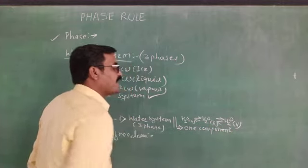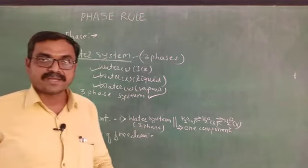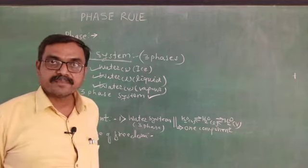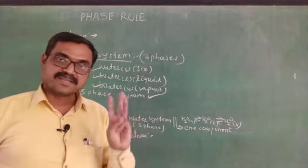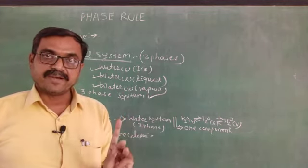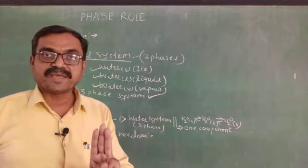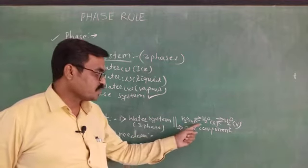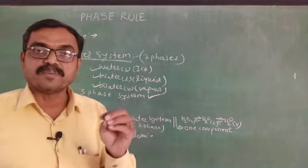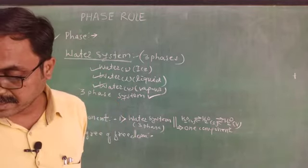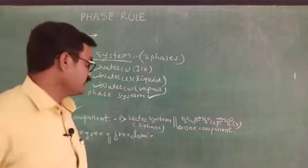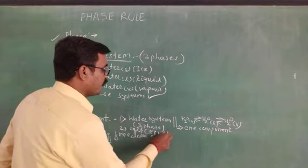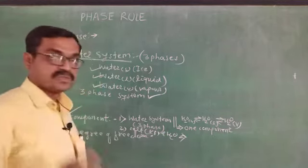Water is a three-phase but one-component system. Why? Because in water, three phases are there — solid, liquid, and vapor — but the composition of each phase can be expressed in terms of just one chemical species, H2O. Now take another example: any salt like potassium iodide and water. This system is a two-component system. How many components are there? Two.